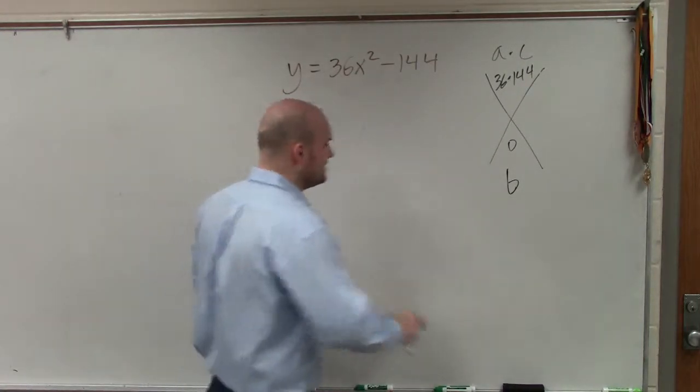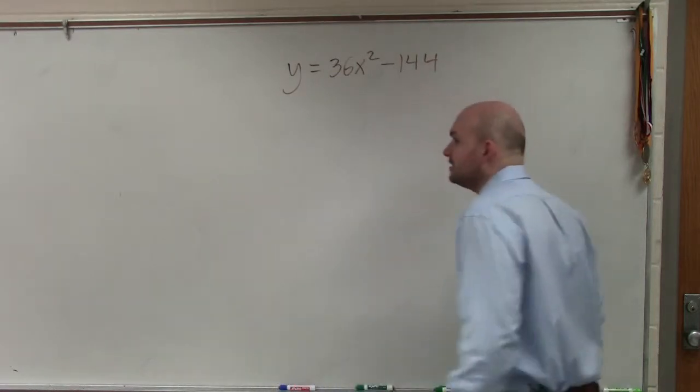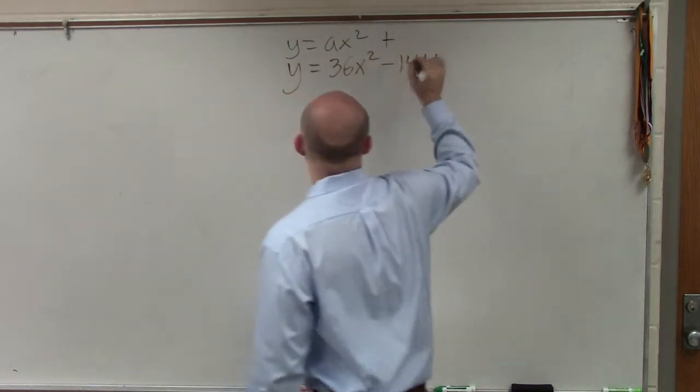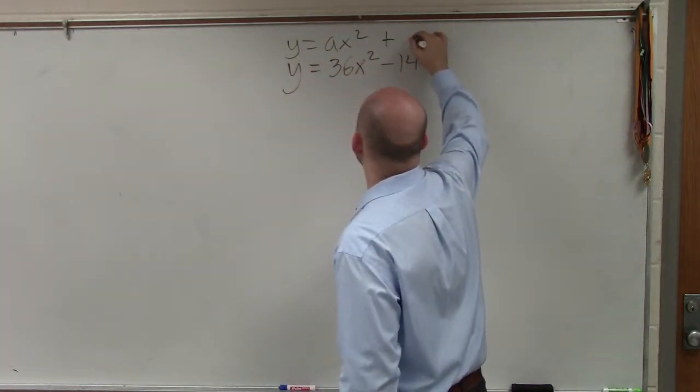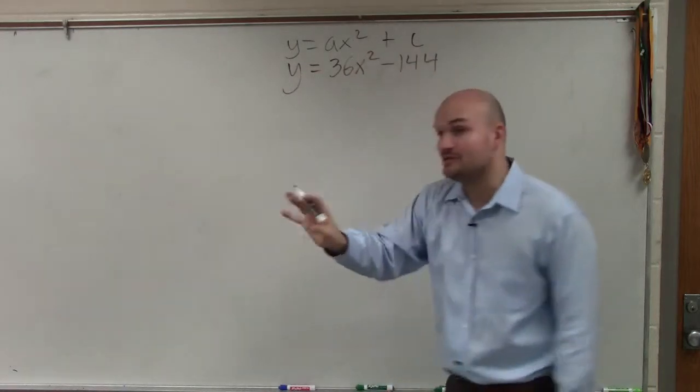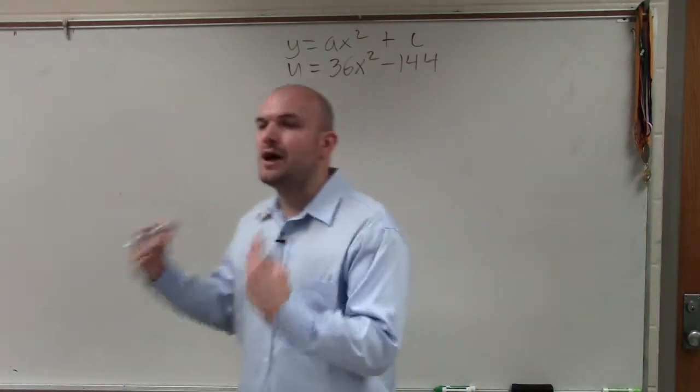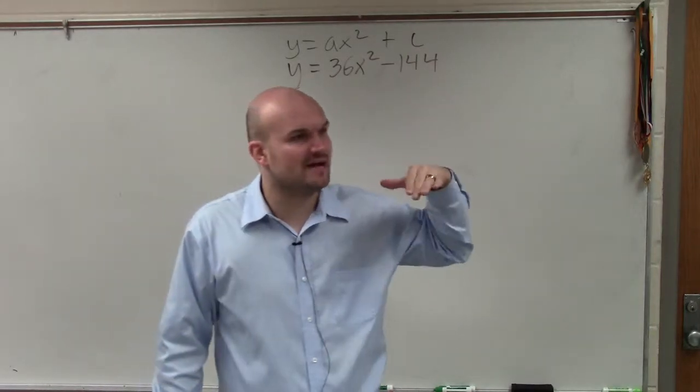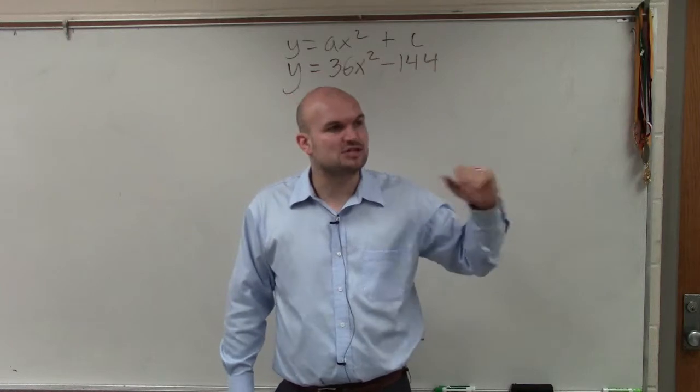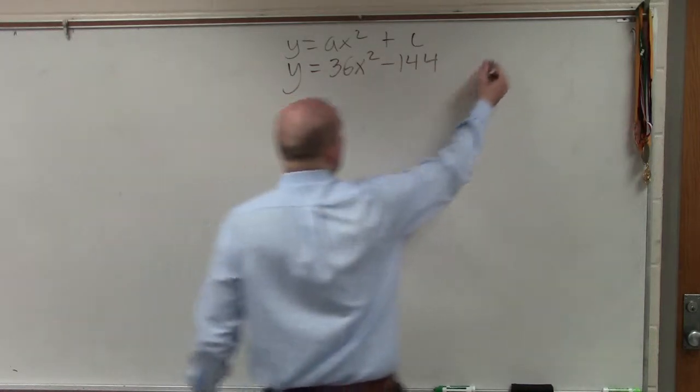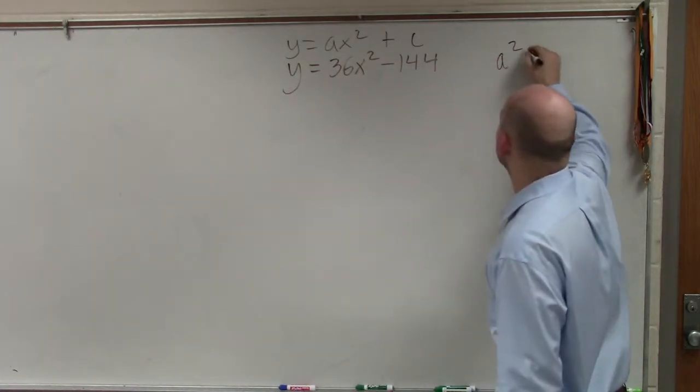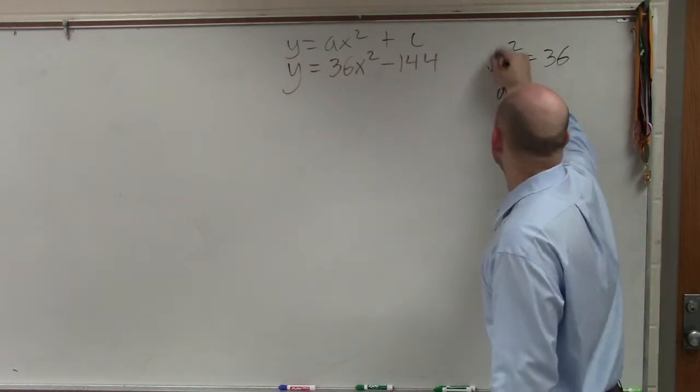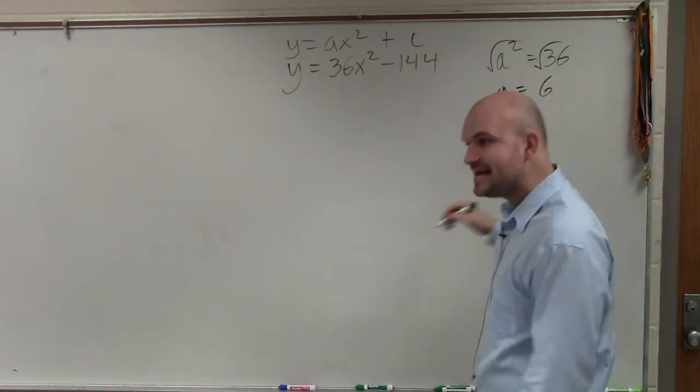However, one thing we notice here is when I look at ax² + bx + c, you could factor out the GCF, that's not a problem. However, I sometimes avoid factoring out the GCF when I see I have squared numbers. Is a a squared number? Yes. If I take the square root, a equals 6.